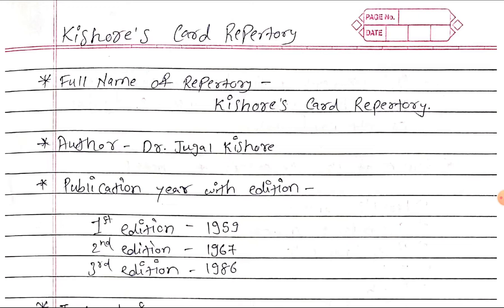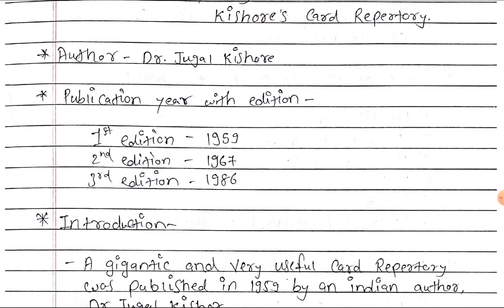The full name of the repertory is Dr. Kishore's Card Repertory, author Dr. Jugal Kishore. Publication year with edition: the first edition was published in the year 1959, the second edition in the year 1967, and the third edition in the year 1986.